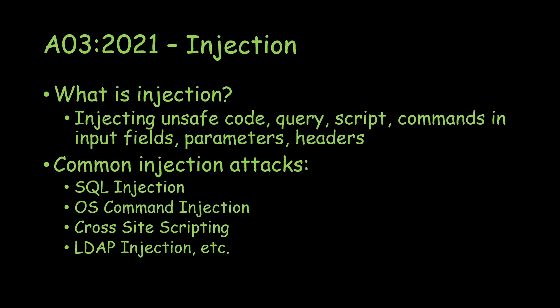Injection also occurs on headers. These things happen because of a lack of input validation. Whatever data is sent from the client is not validated by the server — it just processes that data. If it is unsafe data, the server will go ahead and process it anyway. That's why different types of attacks occur, and it's ranked number three in 2021.